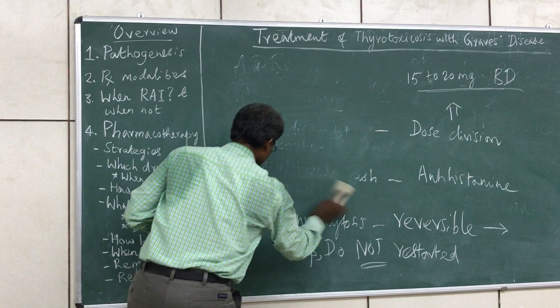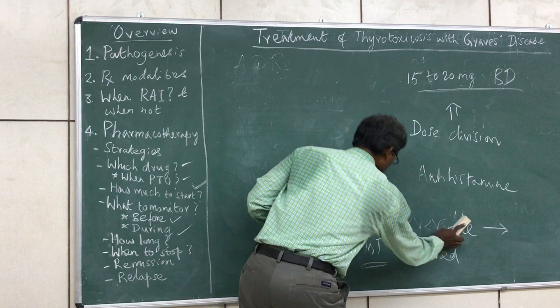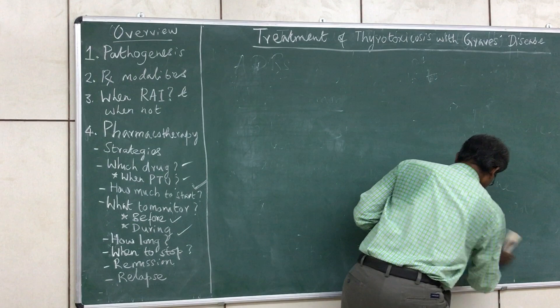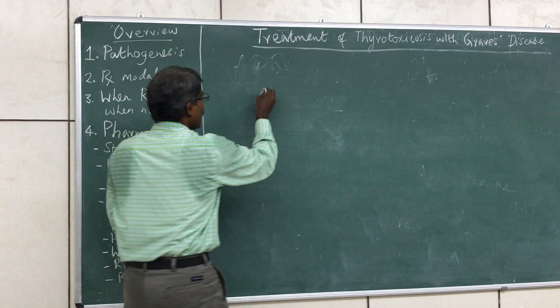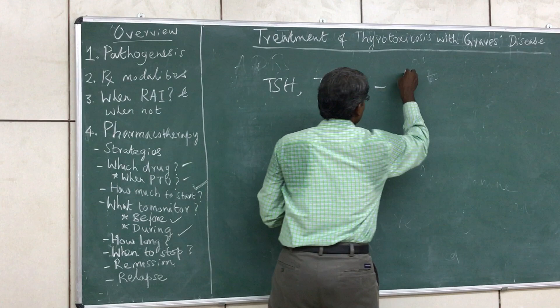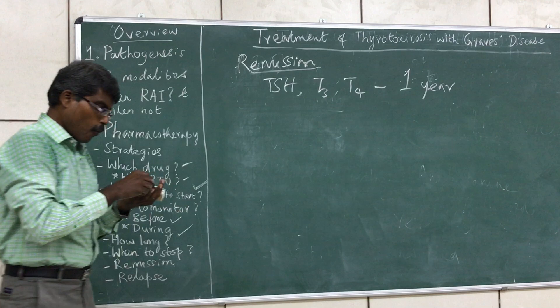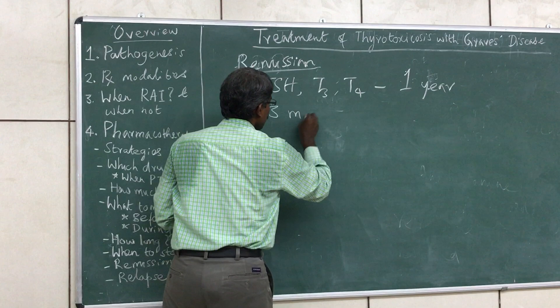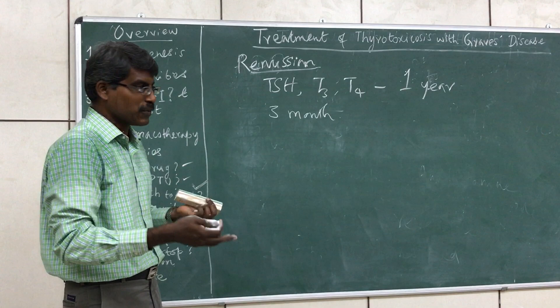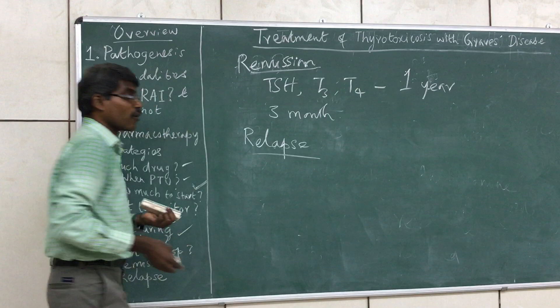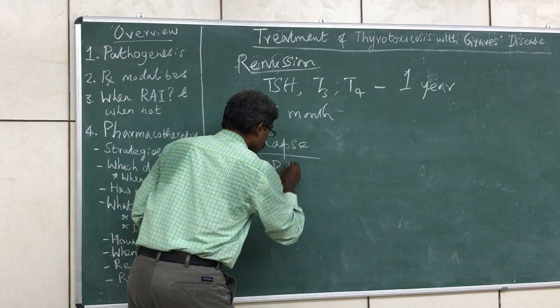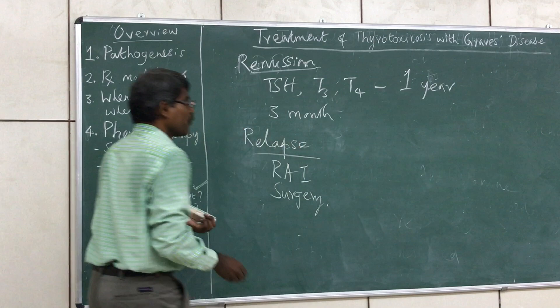When is a patient said to be in remission? After stopping therapy, if the patient has normal TSH, T3, and T4 for one year, the patient has achieved remission. During that first year after stopping, follow up every three months. If the patient again develops thyrotoxicosis during follow-up or later — a relapse — the treatment would be either radioactive iodine or surgery.